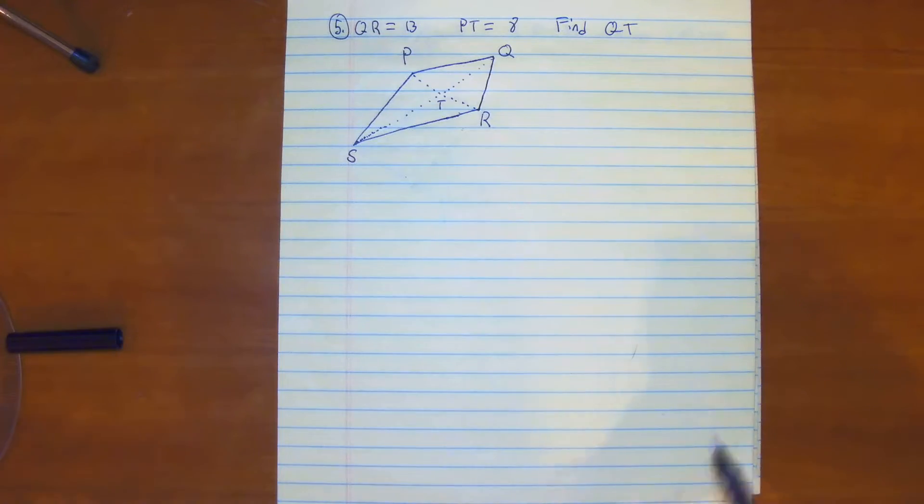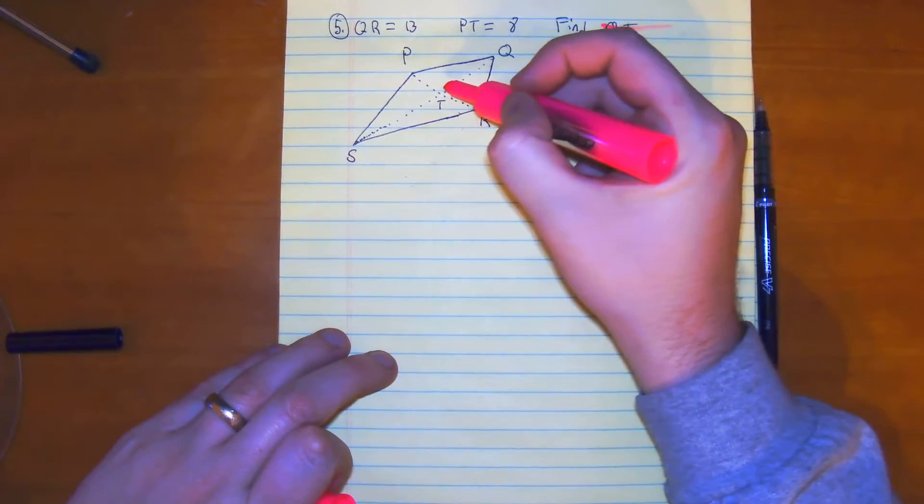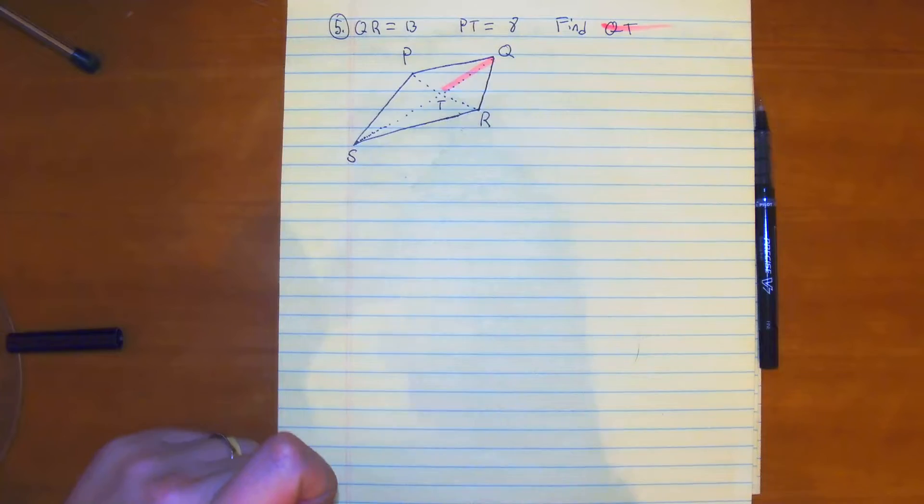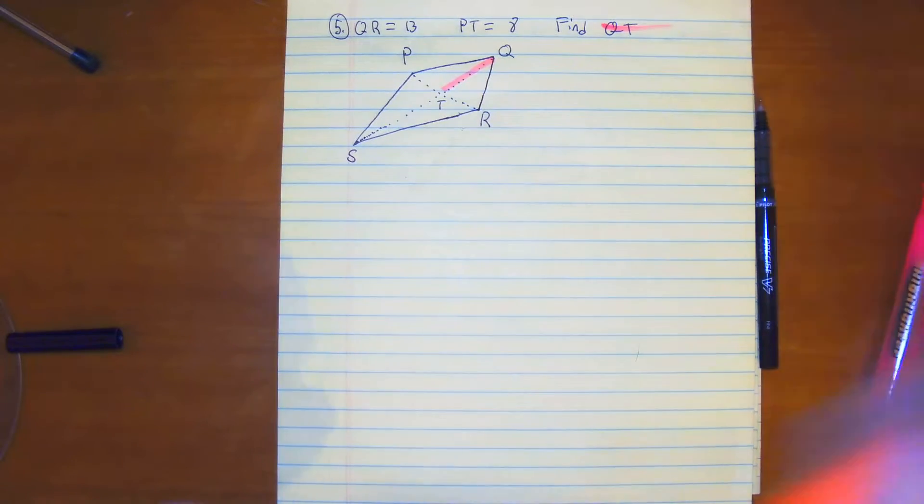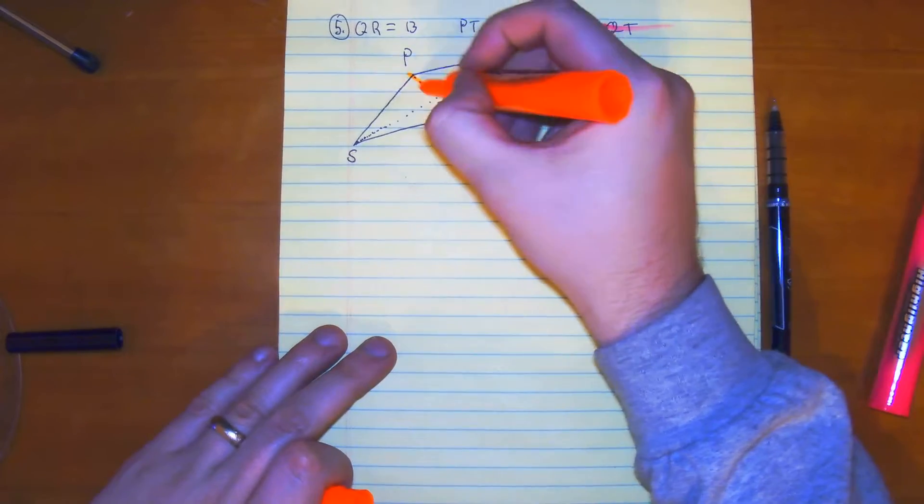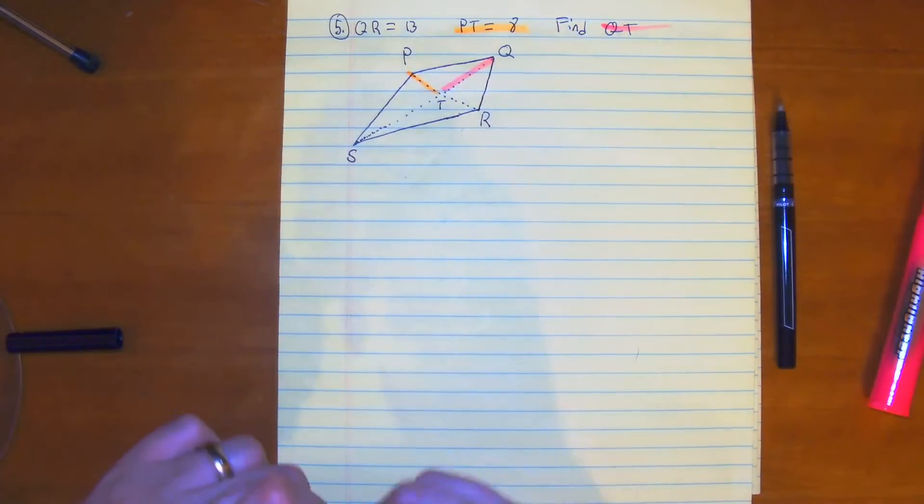So QT would look like this, and then we have PT, which would look like this. That's going to be 8.